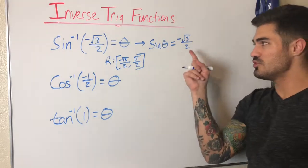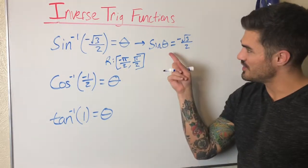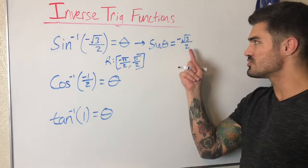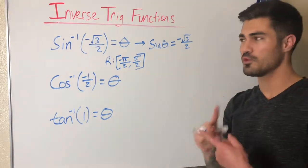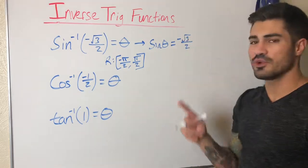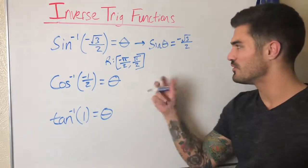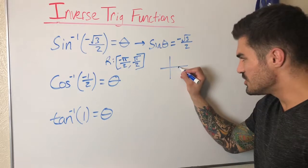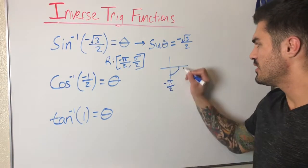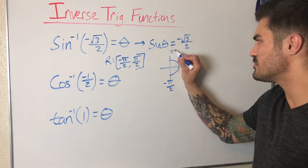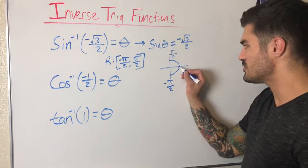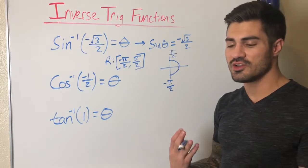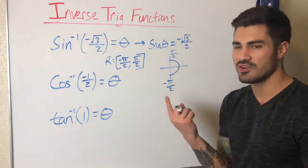A very common mistake: for negative root three over two, the reference angle is pi over three. Since we're negative and looking at the range, we're in the fourth quadrant. The biggest mistake students make is writing five pi over three — because it's fourth quadrant and gives negative root three over two — but that's incorrect. Five pi over three is not within the interval from negative pi over two to pi over two. We're going from zero back to negative pi over two and from zero forward to pi over two, not around the full unit circle to two pi.